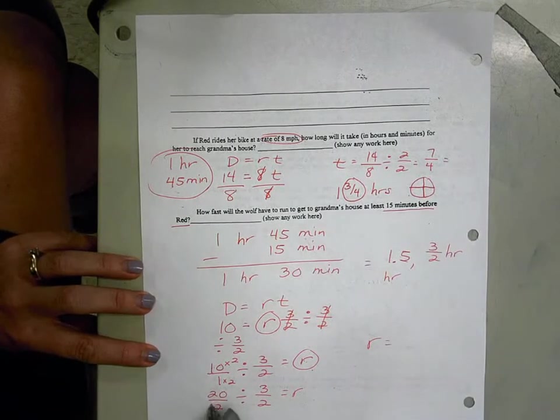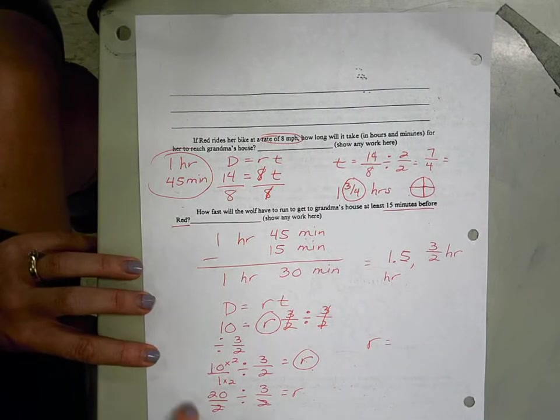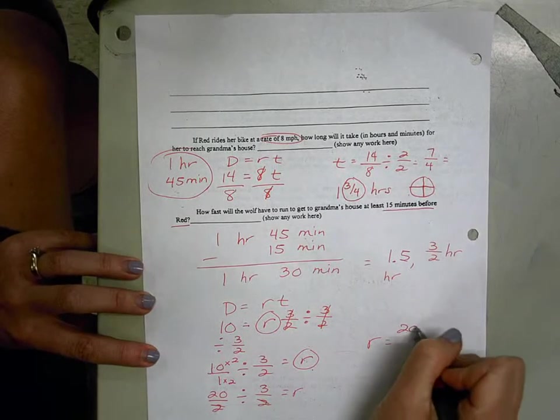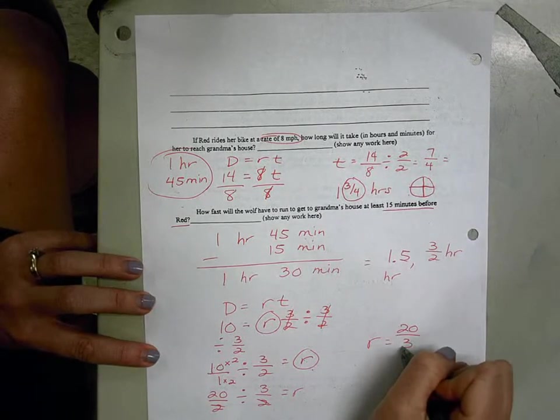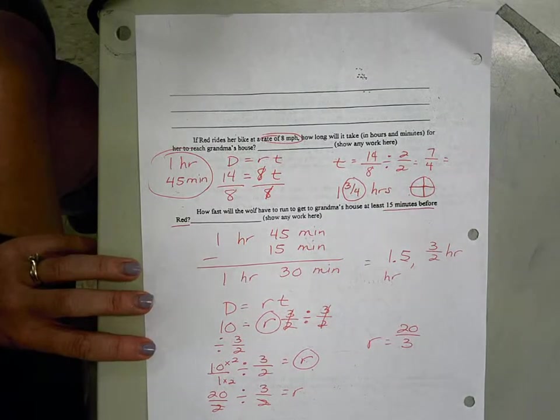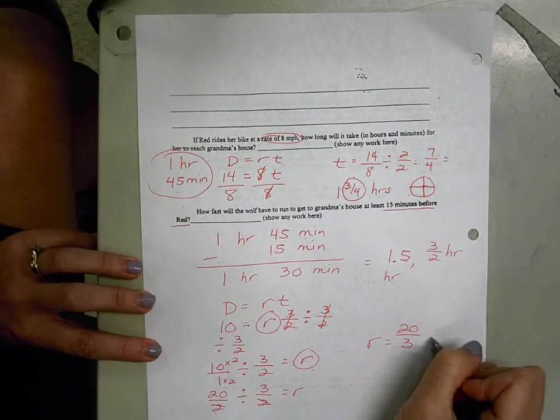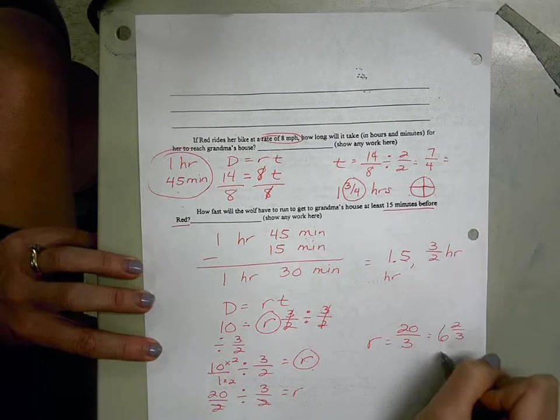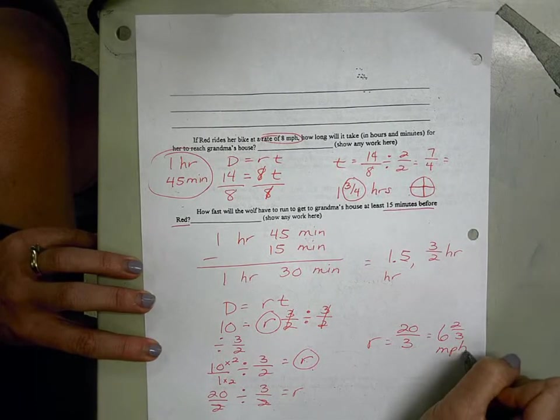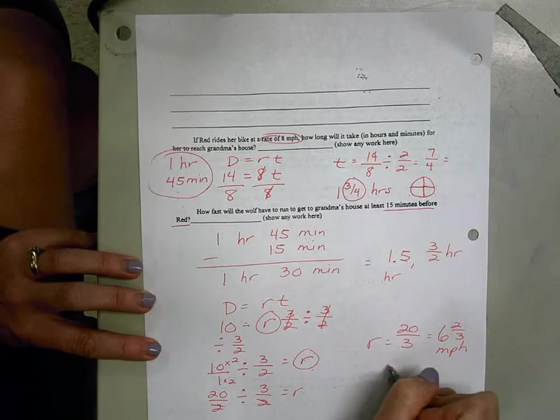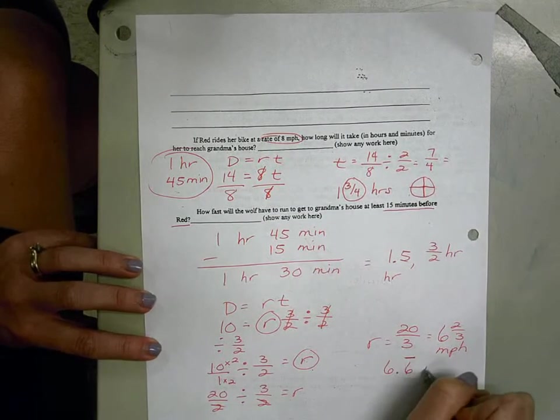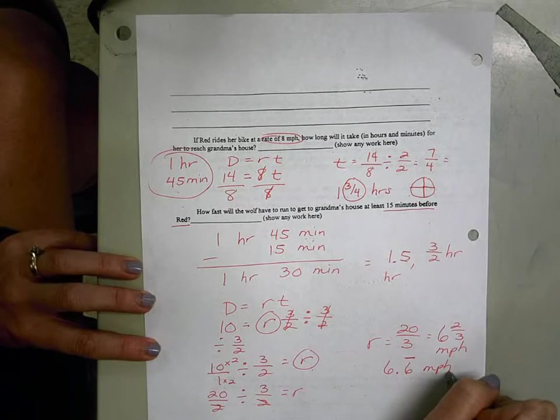So the wolf's rate, since 2 divided by 2 is 1, is going to be 20 divided by 3. 20 divided by 3. Which, because we're talking about speed, it makes more sense if we make that answer into a mixed number. So 6 and 2 thirds miles per hour. Or if you wanted to use the decimal version, 6 and 6 tenths repeating. Make sure you use the repeating symbol. Miles per hour.